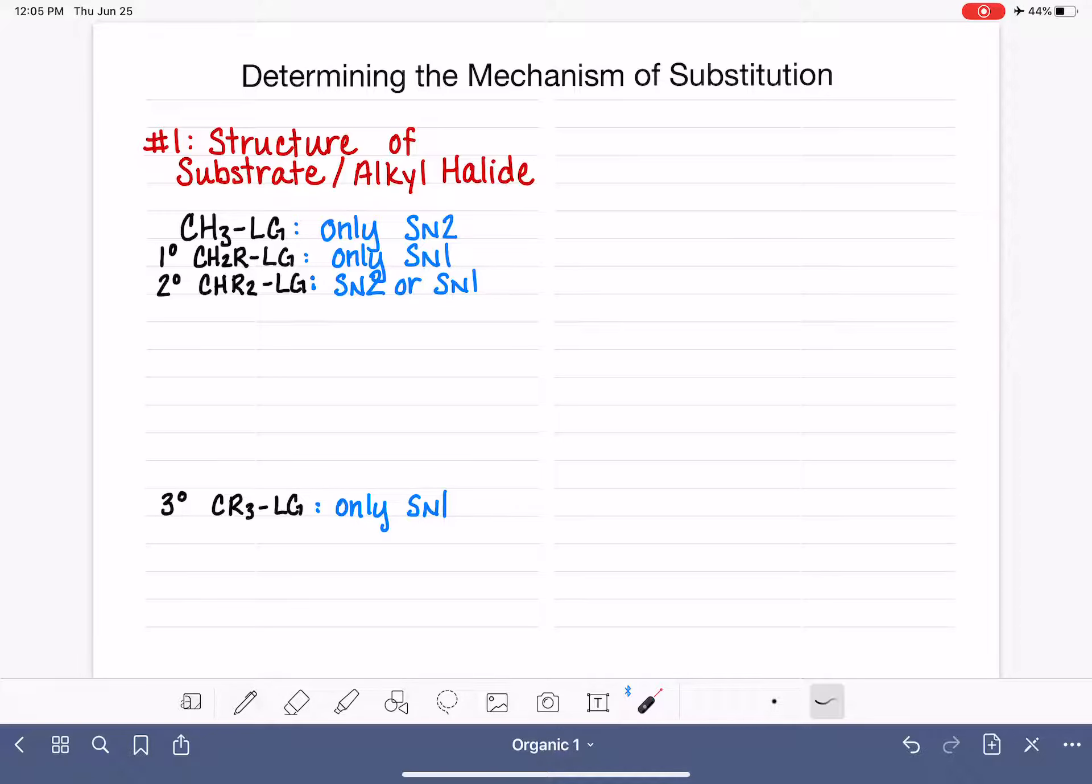Now there are a couple of types of molecules that fit in the middle between secondary and primary that you haven't been introduced to yet. One is called an allylic alkyl halide. An allylic alkyl halide is also, like secondary, going to do either the SN2 or the SN1 mechanism.